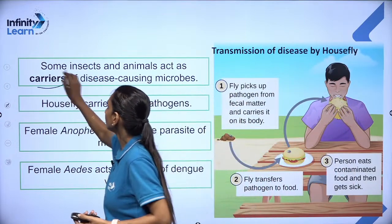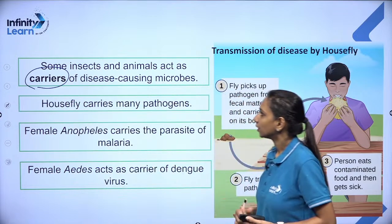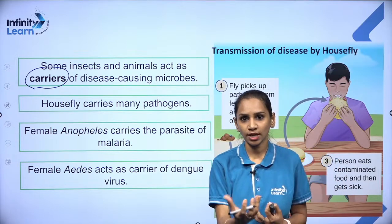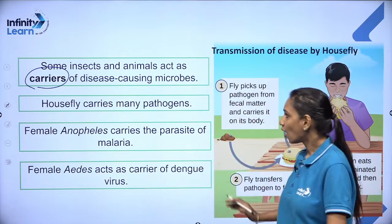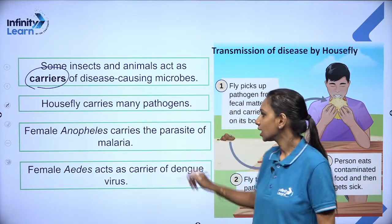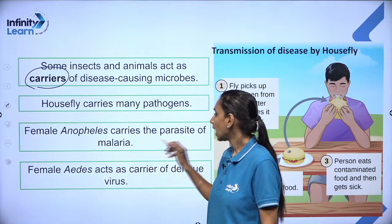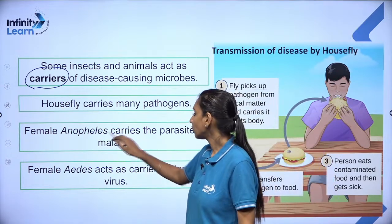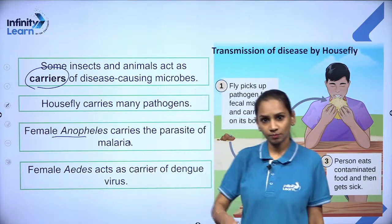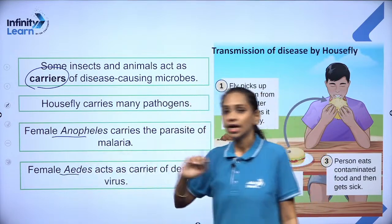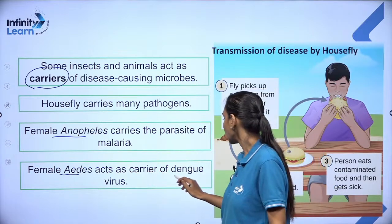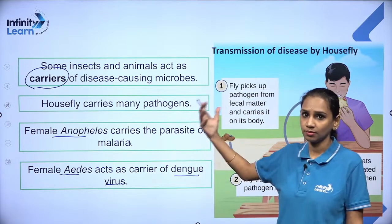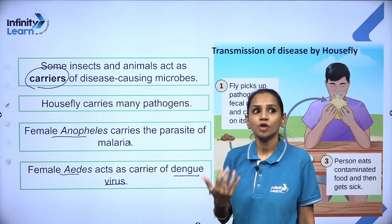Carriers are very important. Some insects and animals act as carriers — they do not produce the disease themselves but help in spreading it. Houseflies carry many pathogens. The female Anopheles mosquito carries the parasite of malaria. Female Aedes mosquito acts as a carrier of dengue virus. In this way, insects and animals act as carriers for the transmission of disease.